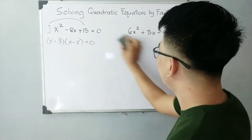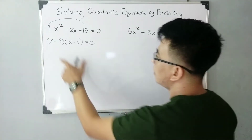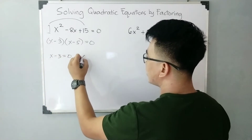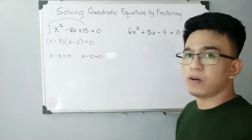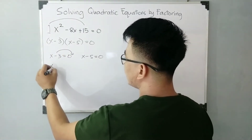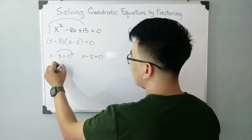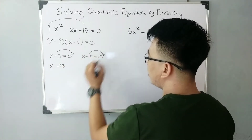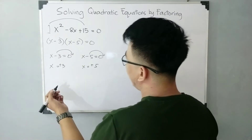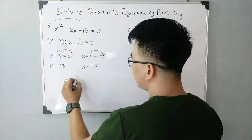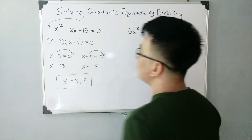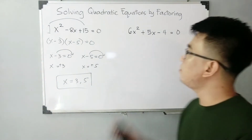By the zero product property, we equate each factor to zero: x minus 3 equals zero, and x minus 5 equals zero. Transposing gives x is equal to positive 3, and x is equal to positive 5. So the possible answers for item number 3 are x is equal to 3 or 5.